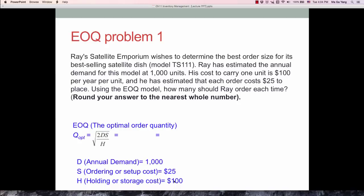Each component needs to be plugged in. So square root 2 times 1,000 times 25 divided by 100 which leads to square root 500. We need to round the answer to the nearest whole number, so 22.36 can be rounded down into 22 units.